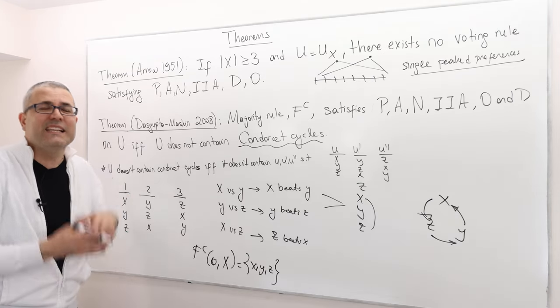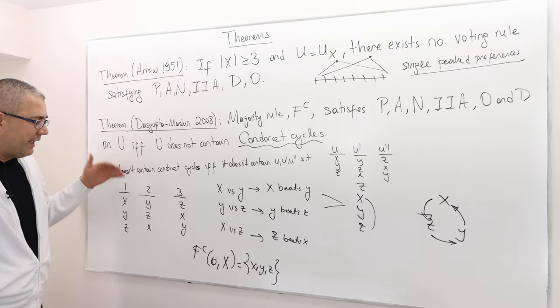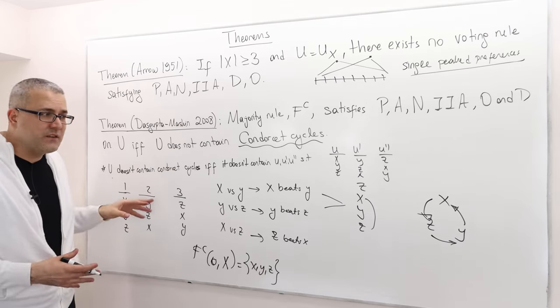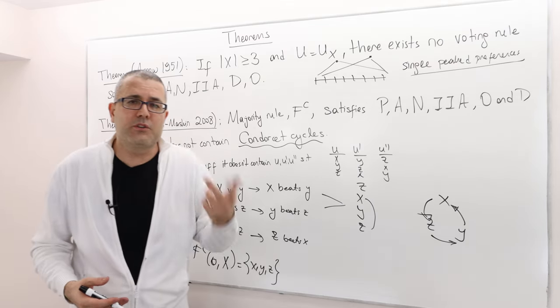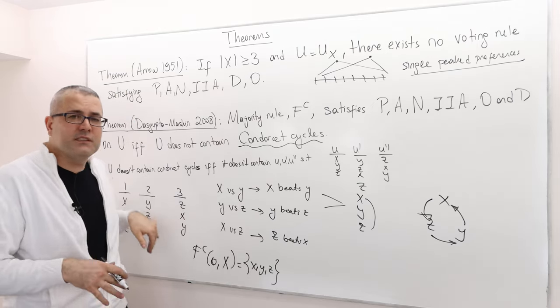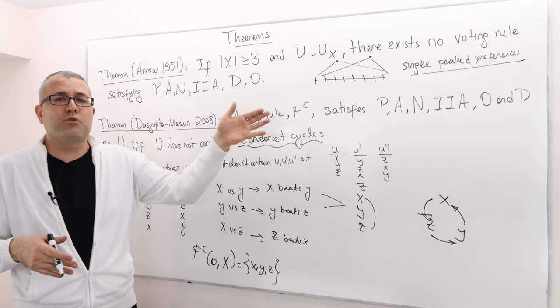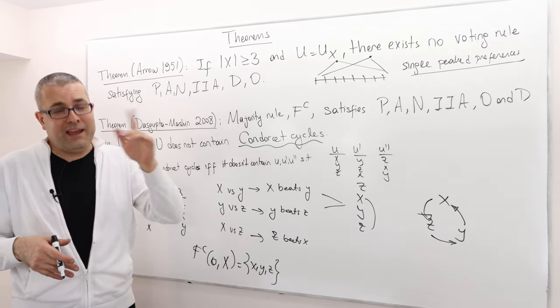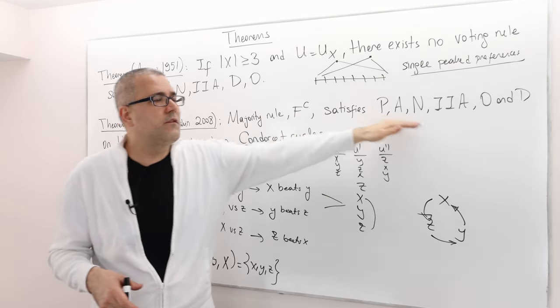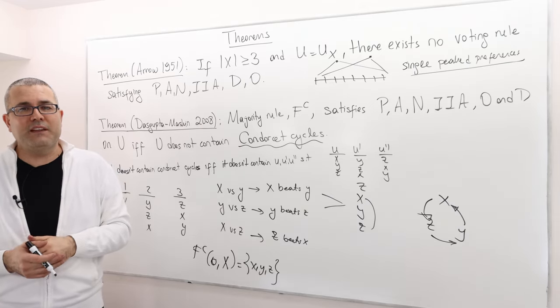In this case, by the way, the Condorcet rule F gives us everything: x, y, z. So you have to break the cycle, you have to break the tie in some tie-breaking rule. If the domain doesn't allow a preference domain like this where we may get Condorcet cycle, if our domain of preferences is free from such constructs, then majority rule is a rule which satisfies all our six properties. This is what it means.